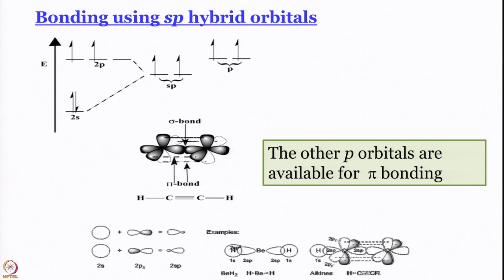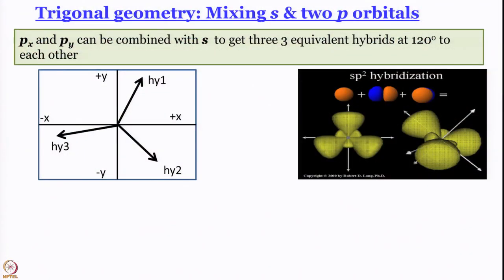So this is what gives you the major lobe, minor lobe, and nucleus within the minor lobe. How does bonding take place? You have 2 sp orbitals overlapping, and the remaining p orbitals are available for pi bonding. That is why in acetylene you have 1 sigma bond, then 1 pi bond from px and 1 pi bond from py. The pz is used for hybridization which is used for sigma bonding; px and py are used for pi bonding. That is what we have discussed about linear geometry. Next class we will talk about trigonal geometry and sp2 hybrid orbitals.